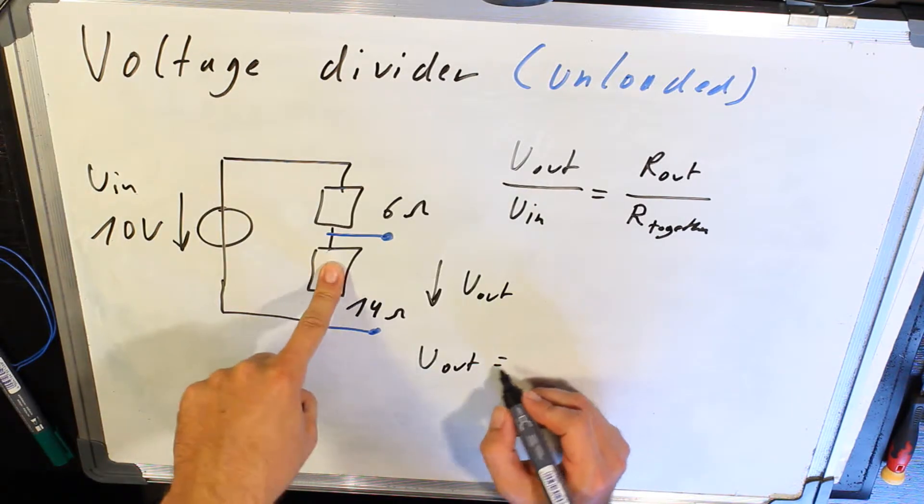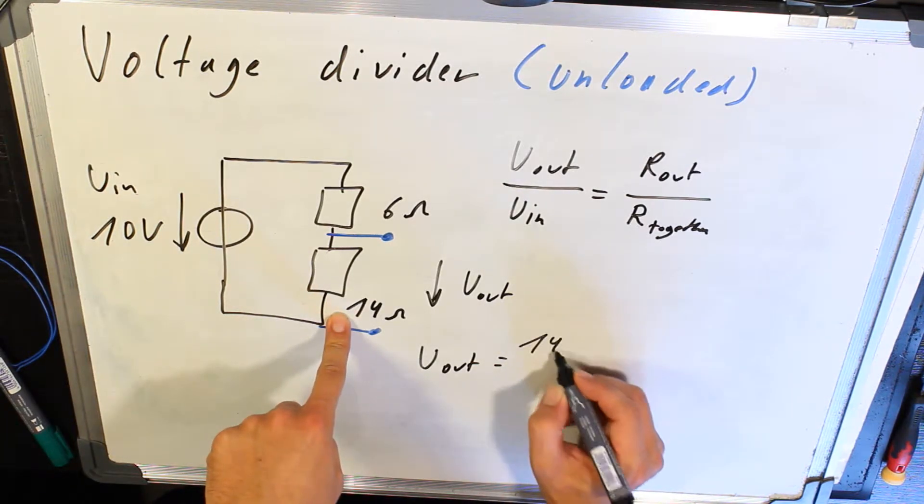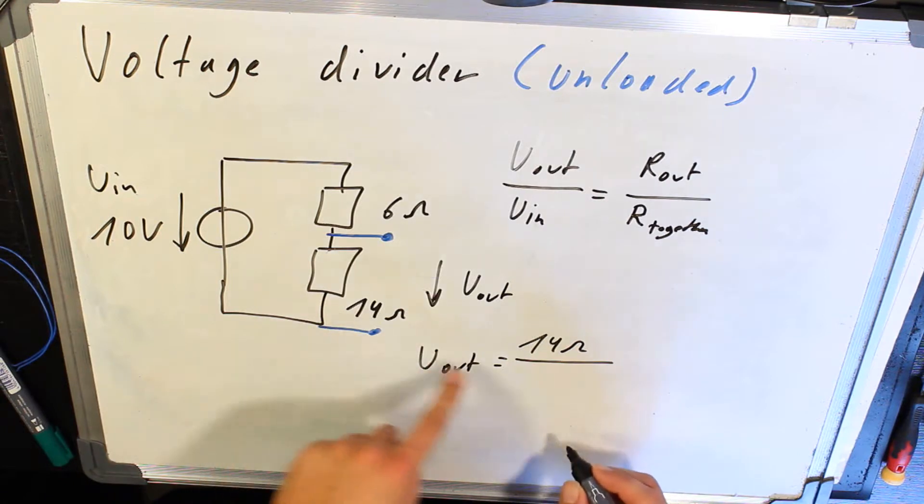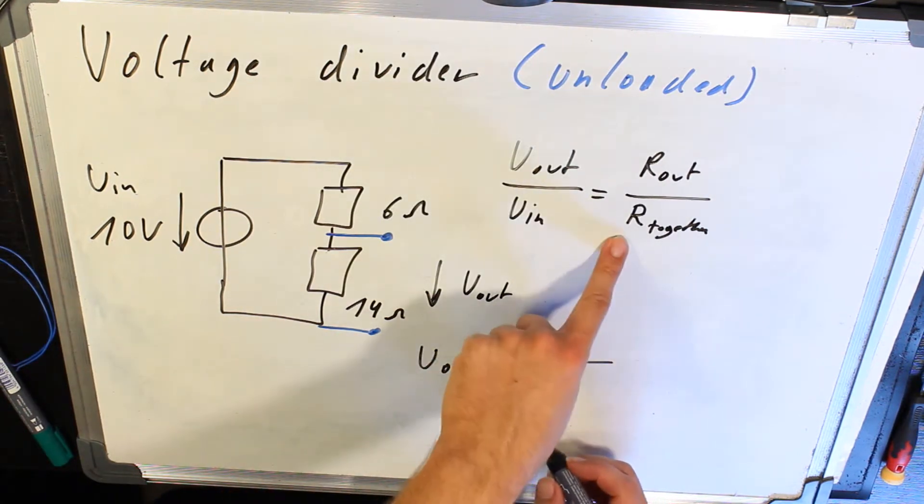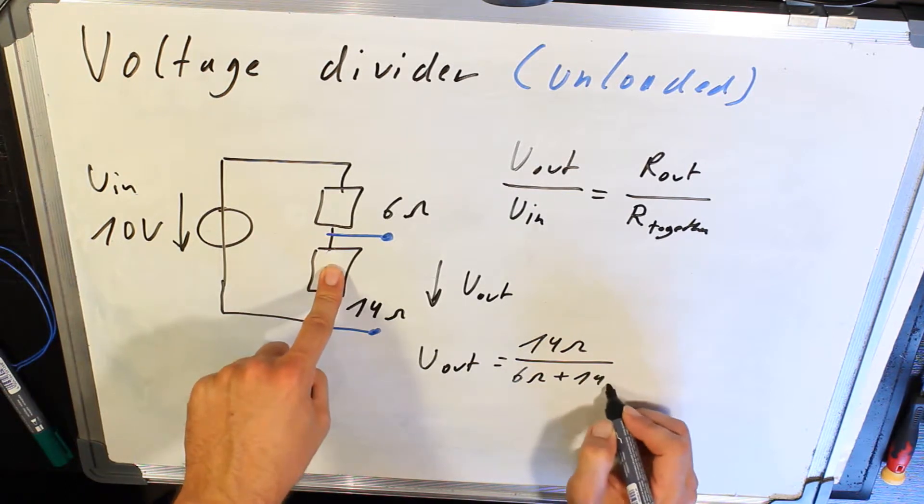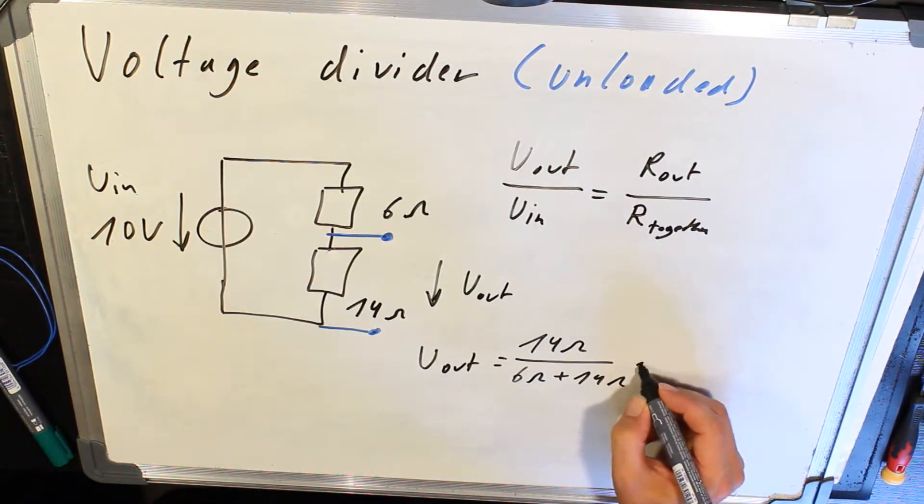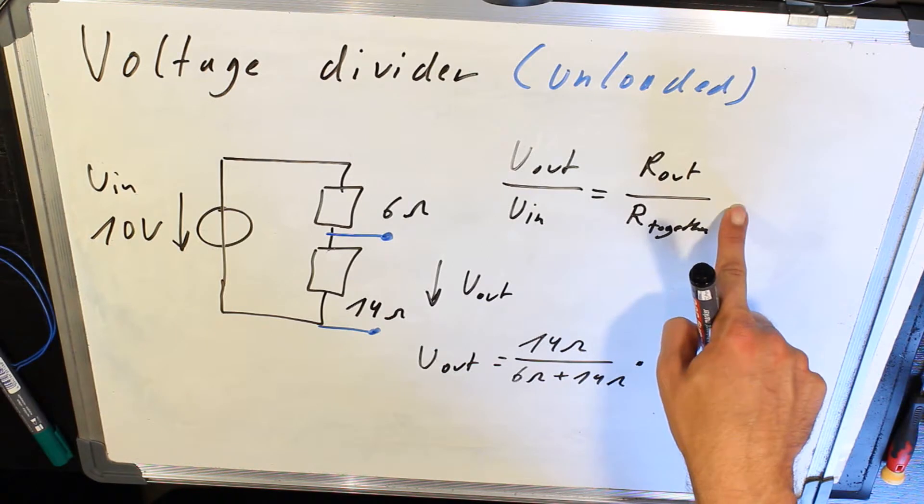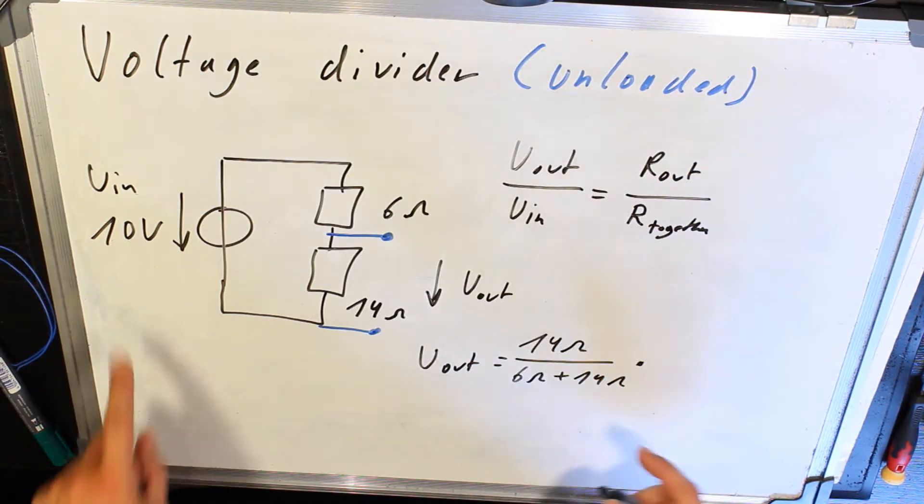R_out is here, is 14 ohm divided by R_together. So 6 ohm plus 14 ohm, multiplied here by U_in. U_in is 10 volts.